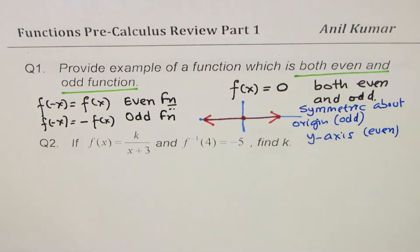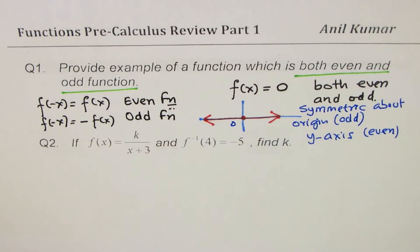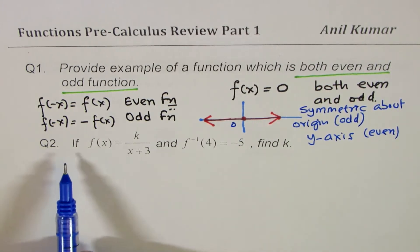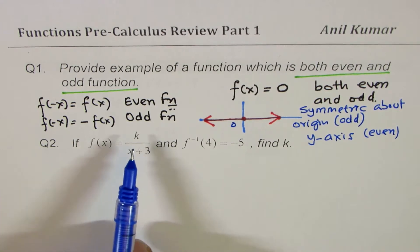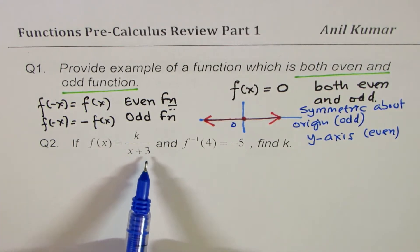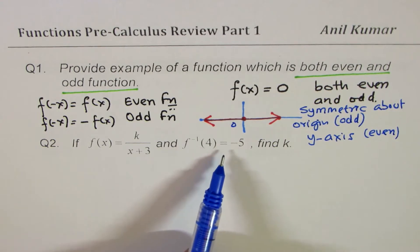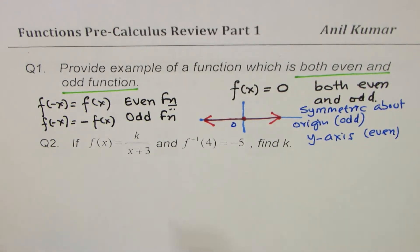I hope this concept is absolutely clear. Question 2: if f(x) = k/(x+3) and f⁻¹(4) = -5, find k.